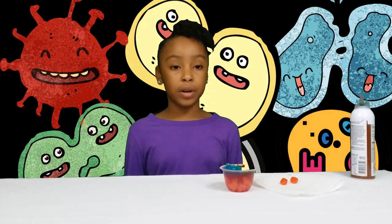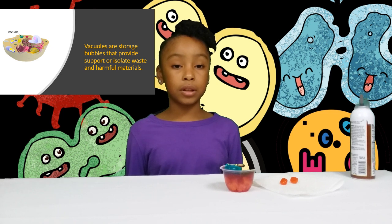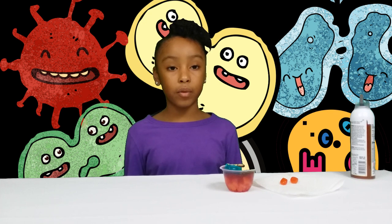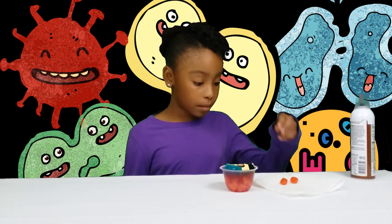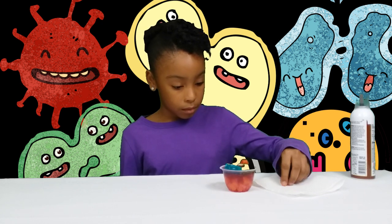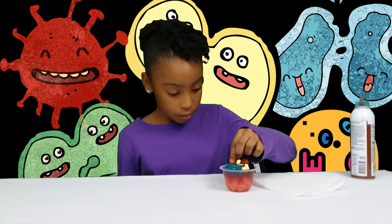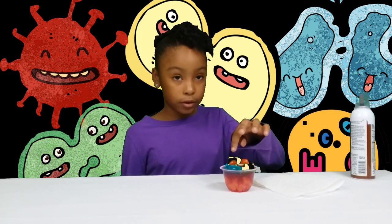The fruit gushers will be the vacuoles. Vacuoles are storage bubbles that support and isolate harmful waste. They are like soldiers going into a war to keep everyone safe — they are little soldiers.